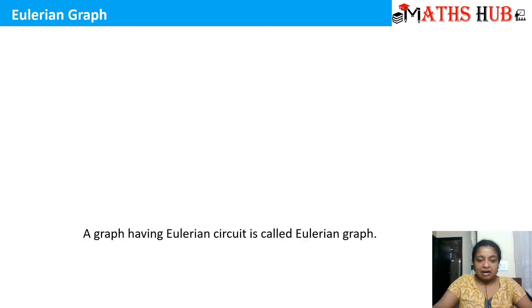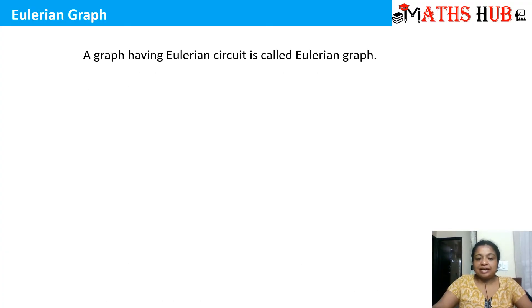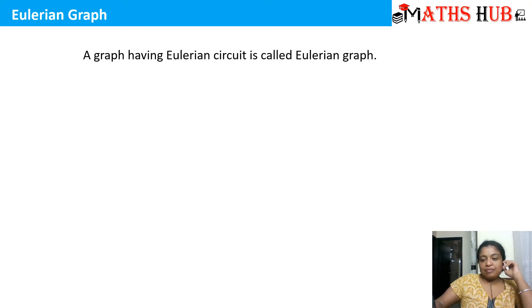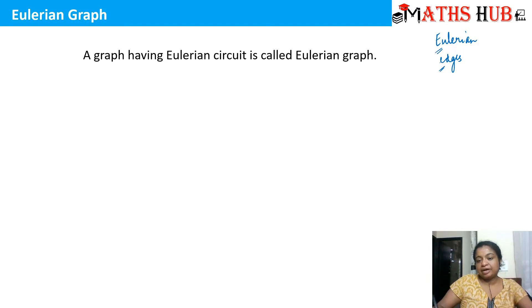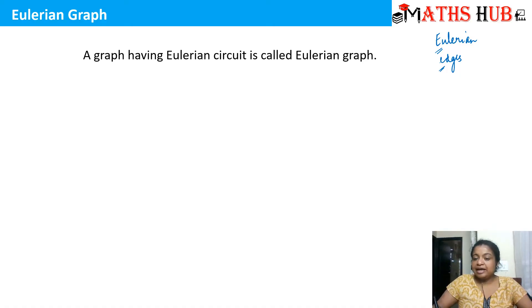The next definition is of an Eulerian graph. Any graph which possesses an Eulerian circuit is said to be an Eulerian graph. To remember: both 'Eulerian' and 'edge' start with E. When talking about an Eulerian graph, it must contain an Eulerian circuit, and in that circuit the edges must be traversed exactly once — so there is a restriction on the edges.